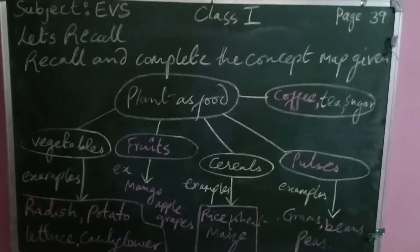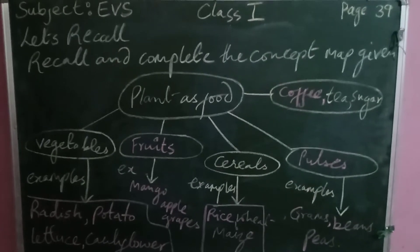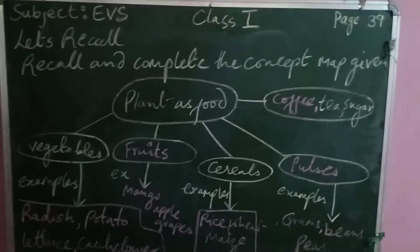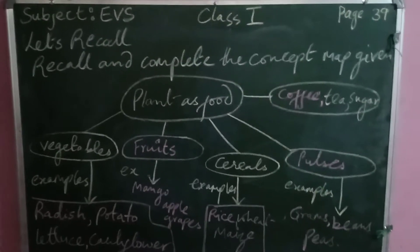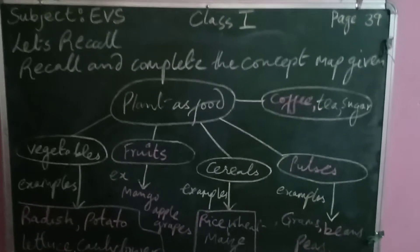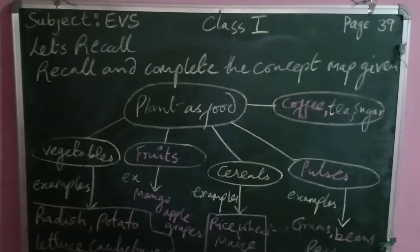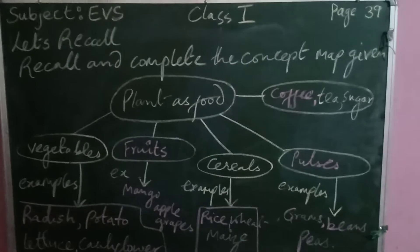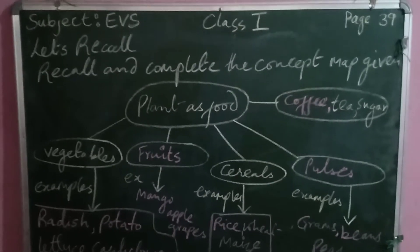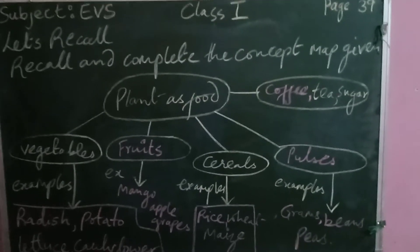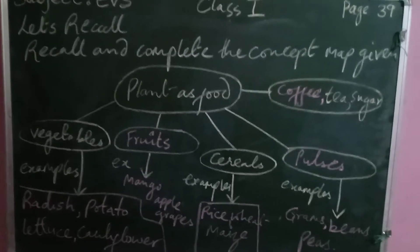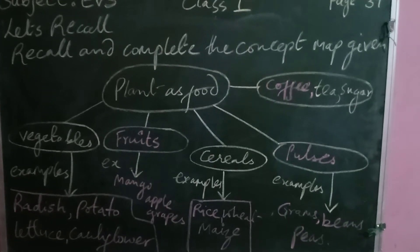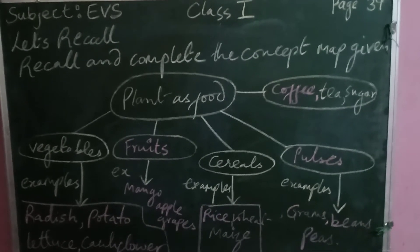Now let's recall and complete the concept map given on page number 41 in your textbook. There are blank spaces to fill in. Plants as food is categorized into vegetables, and the first blank space will be fruits, then cereals, then pulses, then coffee, tea, and sugar. Below vegetables, give examples.